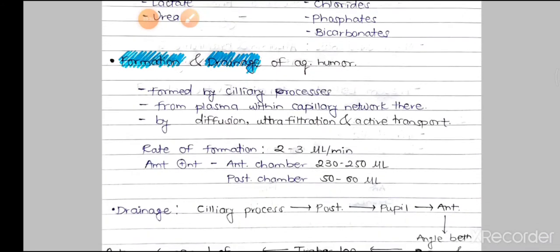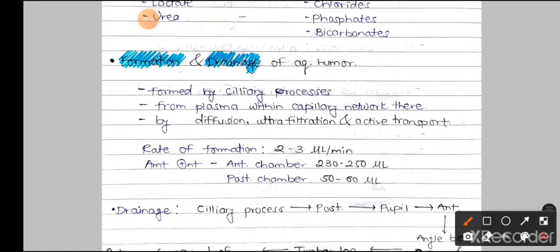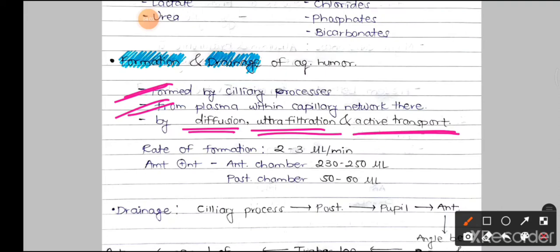The aqueous humor is formed by the ciliary processes, which are present on the ciliary body. It is produced from plasma within the capillary network of the ciliary processes through diffusion, ultrafiltration, and active transport for certain substances. The rate of formation is approximately 2 to 3 microlitres per minute.